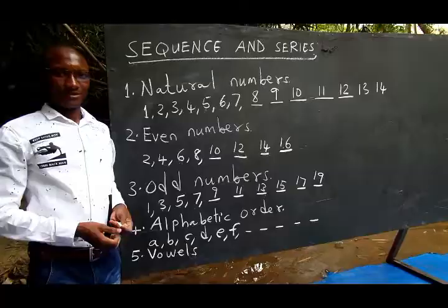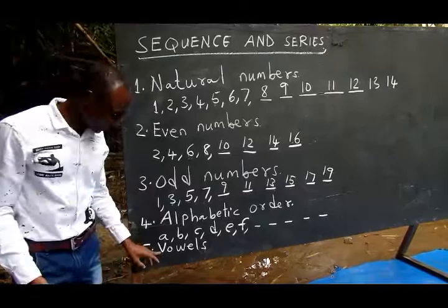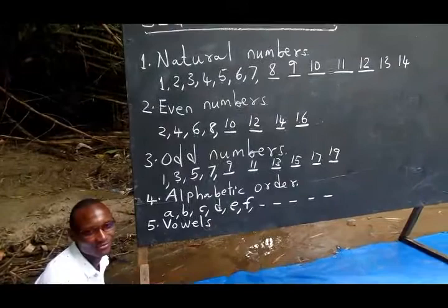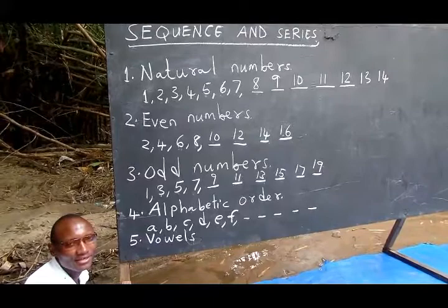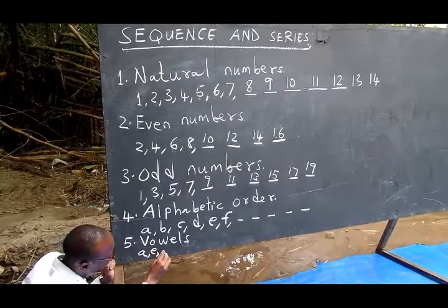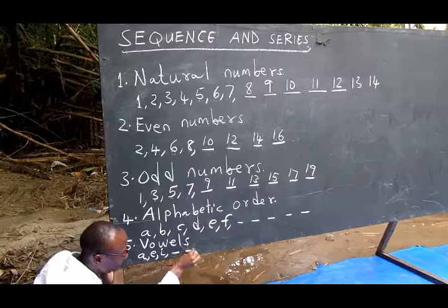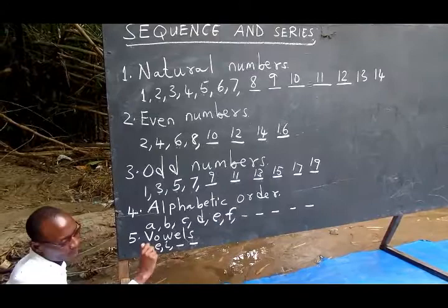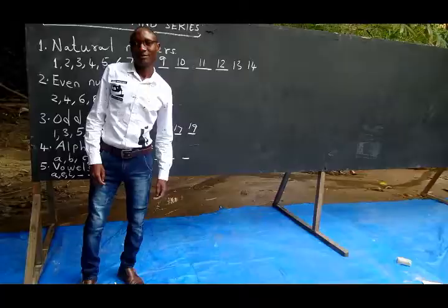Another example of sequence is the vowels, my best friend. Vowels also are in sequence because we can get the next letter. Vowels: A, E, I, O, U. A, E, I, and so on. Someone can fill it here, can fill it here. Can you fill the gap? Because they are in a sequence.